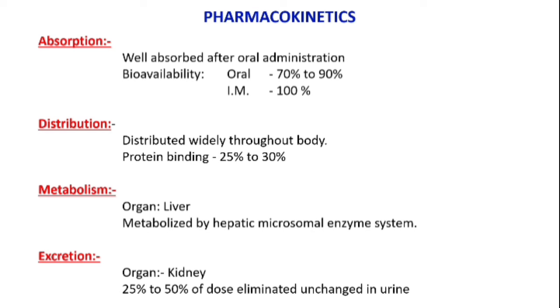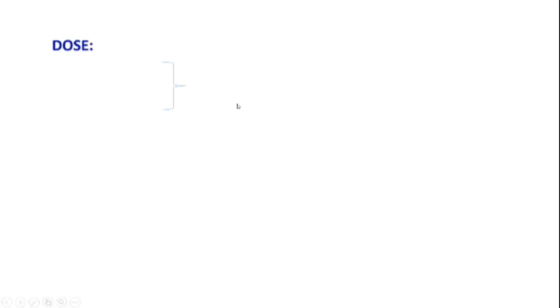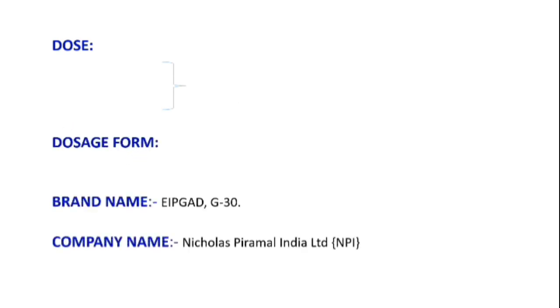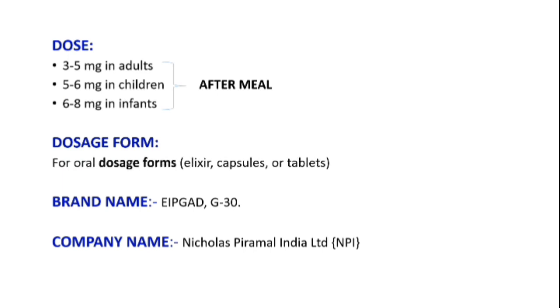Excretion: via the kidneys; 25 to 50% of the dose is eliminated unchanged in urine. Dose: 3 to 5 mg in adults, 5 to 6 mg in children, 6 to 8 mg in infants, after meals. Dosage forms available: elixir, capsules, or tablets. Brand name: Epigard or G30. Company name: Nicolas Primal India Private Limited.